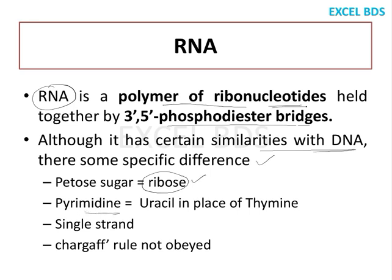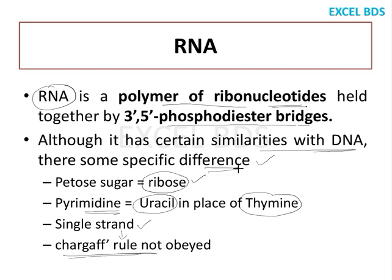In the pyrimidines, instead of thymine which is present in DNA, in RNA we have uracil. Also, RNA is single-stranded whereas DNA is double-stranded. Being single-stranded, RNA will not follow Chargaff's rule. These are the specific differences between RNA and DNA — four basic differences you can write in the exam.